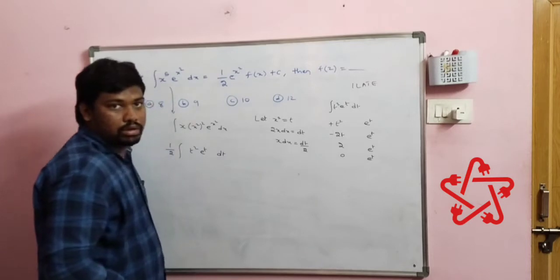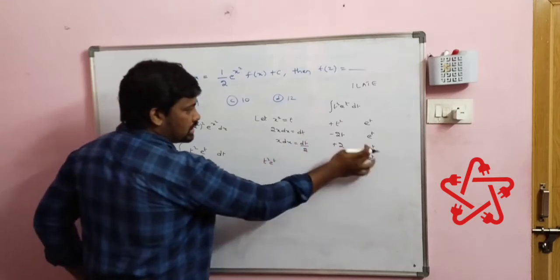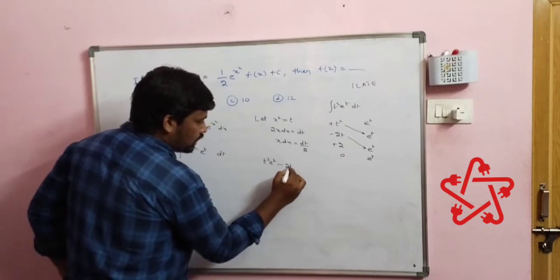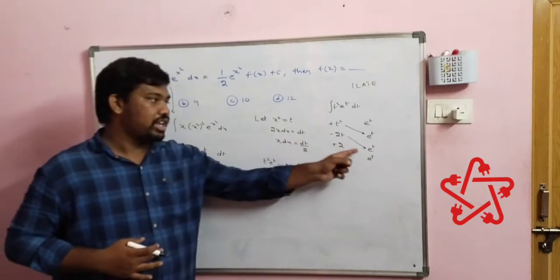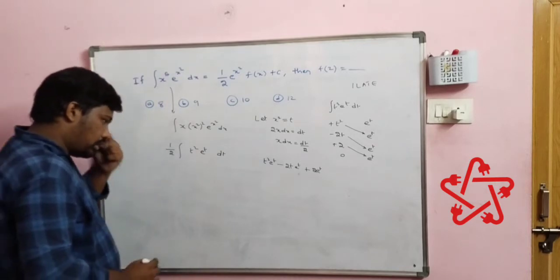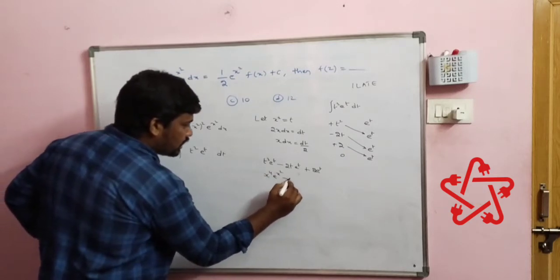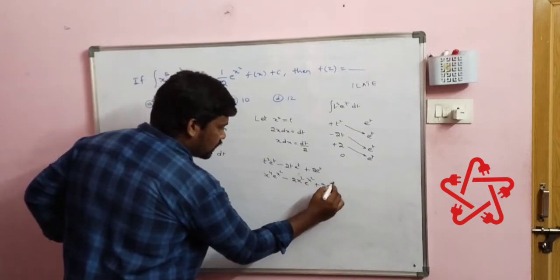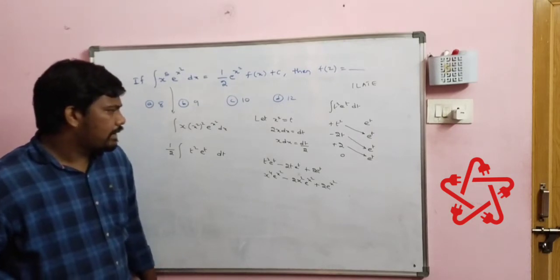Applying Bernoulli's rule, the result is t²eᵗ − 2t·eᵗ + 2eᵗ. Now substitute back t = x²: this becomes x⁴·eˣ² − 2x²·eˣ² + 2eˣ².